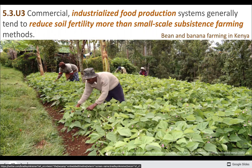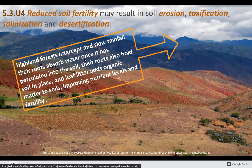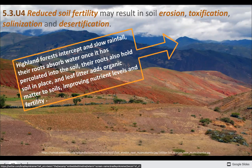Here's a small-scale example where we have a lot of different species — some might actually add nutrients rather than use them. Having a mixture of different plants is super helpful. These trees might provide some shade, which helps the other plants retain water and lose less during hot months. Highland and forest vegetation intercepts and slows rainfall, roots absorb water once it has percolated into the soil, roots hold the soil in place, and leaf litter adds organic matter, improving nutrient levels.